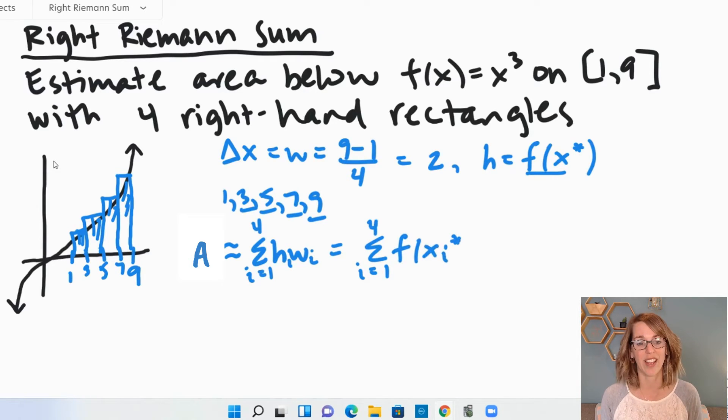And in this case, the star is the right-hand side. And then my width is my delta x.